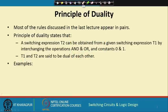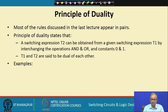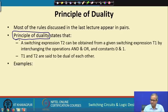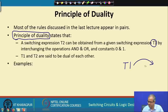The first thing we talk about is something called the principle of duality. Knowingly or unknowingly, we have already been introduced to this principle. So what does the principle of duality say? It says: suppose I have a switching expression T1 given to me. I can transform this expression or identity into another expression T2 by following some rules. What are the rules?